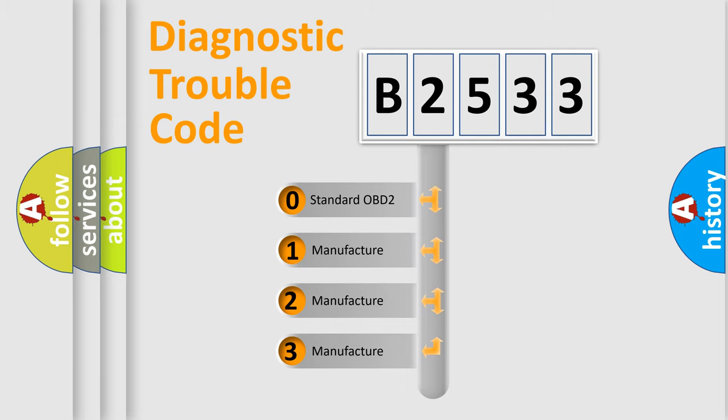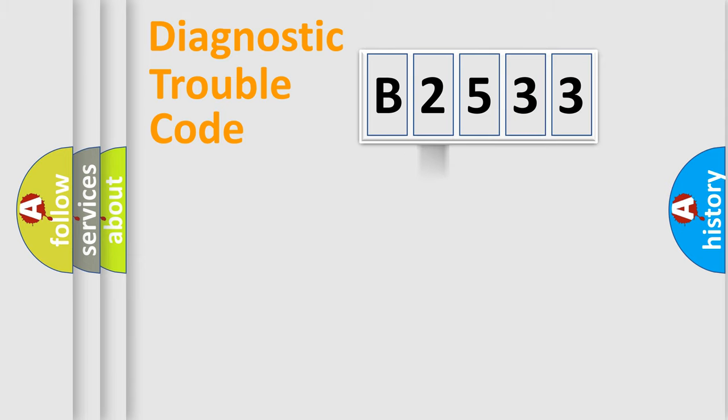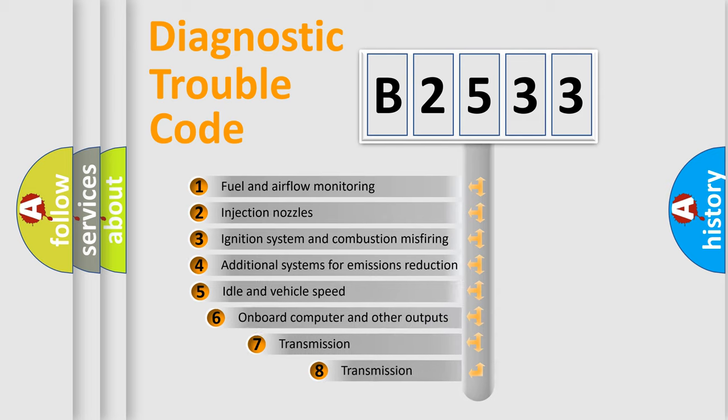If the second character is expressed as zero, it is a standardized error. In the case of numbers 1, 2, or 3, it is a more prestigious expression of the car-specific error.